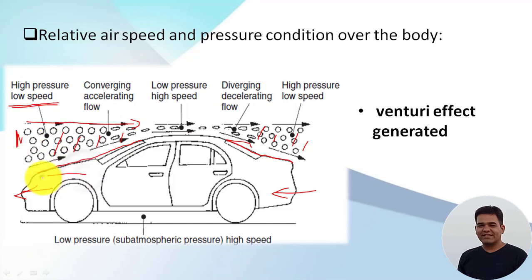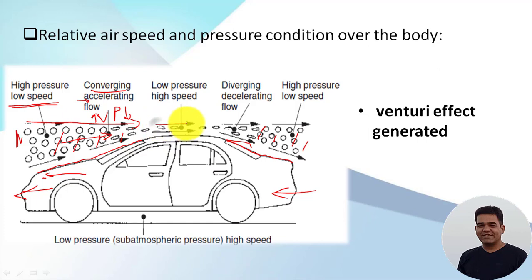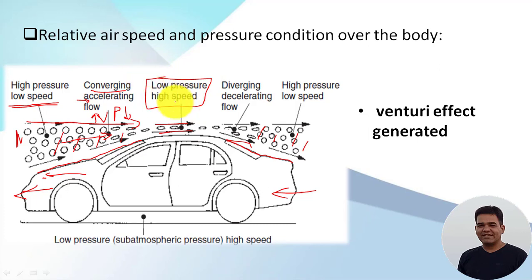As the car moves ahead, the air particles are forced to go through the converging section. As explained in my previous video, when fluid particles approach a converging section, the pressure decreases and velocity starts increasing — so the fluid flow is in accelerating mode. These air particles then enter the throat section, which is the narrowest section, where we get the lowest pressure and highest speed of the moving particles.